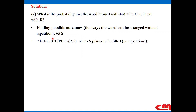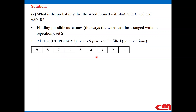The word 'clipboard' has nine letters, which means we have nine places to fill without repetition. I'm going to present that in a row with nine columns, where each column represents a position. As you can see, I have the numbers nine down to one. So I start with the first column — that is my first position. For the first position, all nine letters have a chance to occupy position one, so I have nine choices.